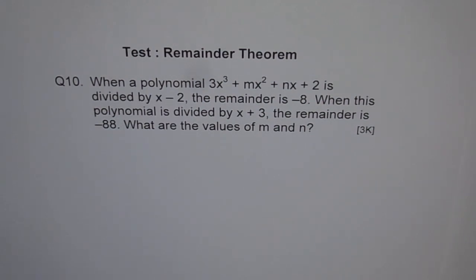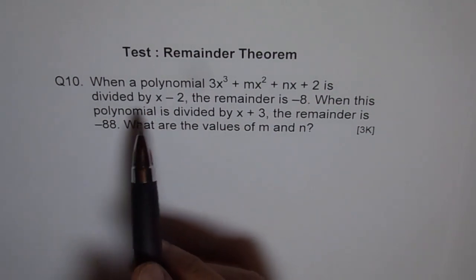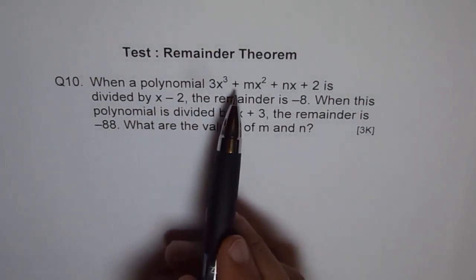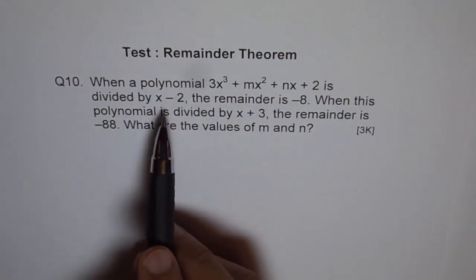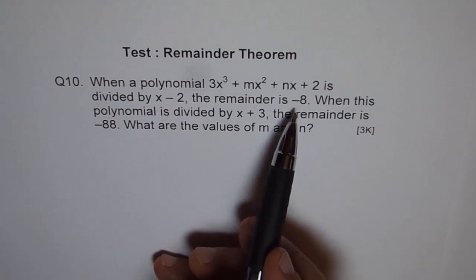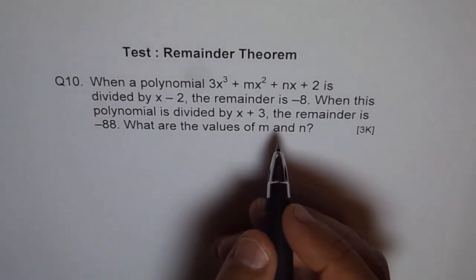This type of question is sure to come, right? So do it carefully and also look into my solution. Now let's go through this statement once again. When a polynomial is divided by this, the remainder is that. That means p(2) is -8. So let's start from there itself.